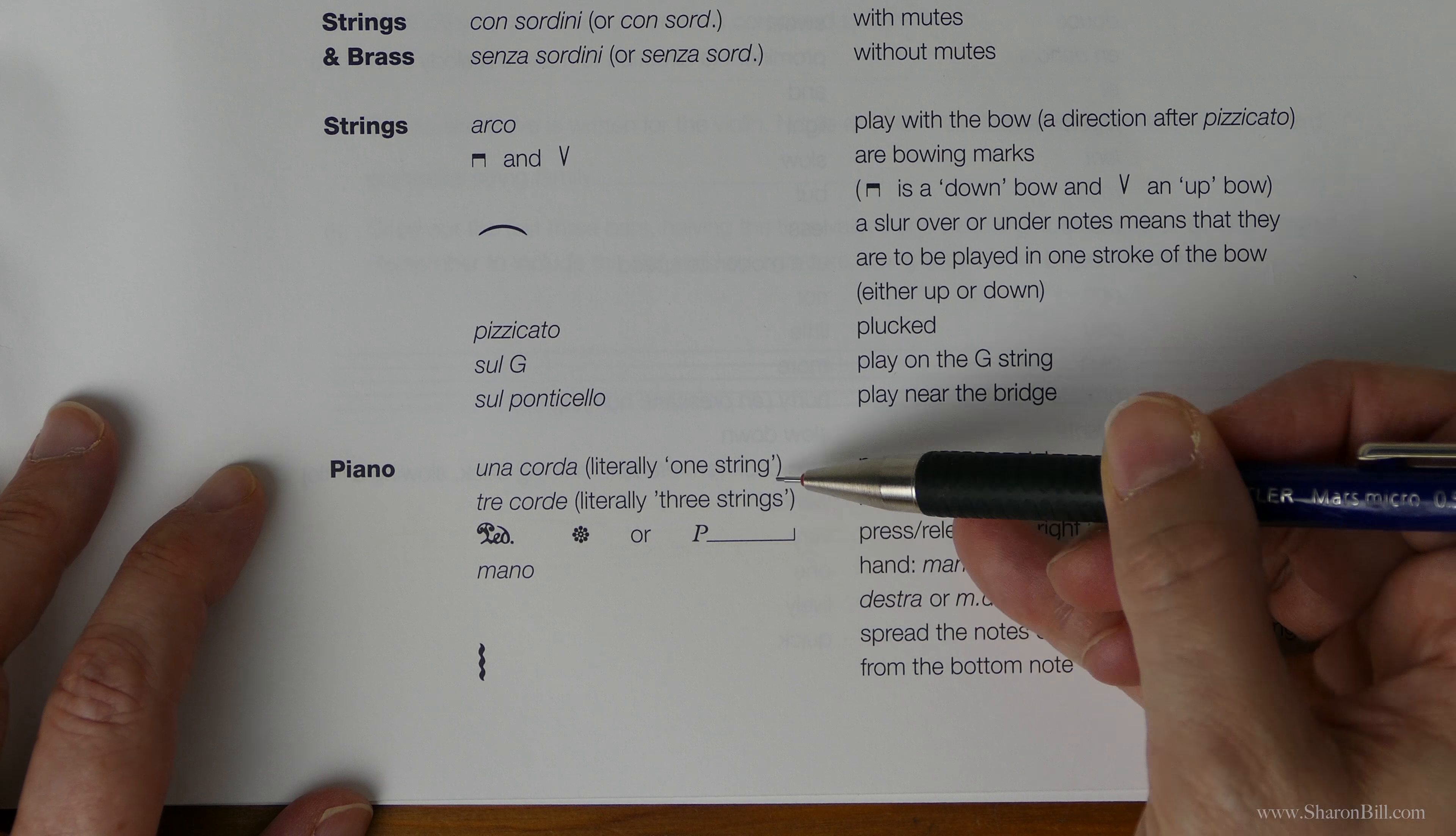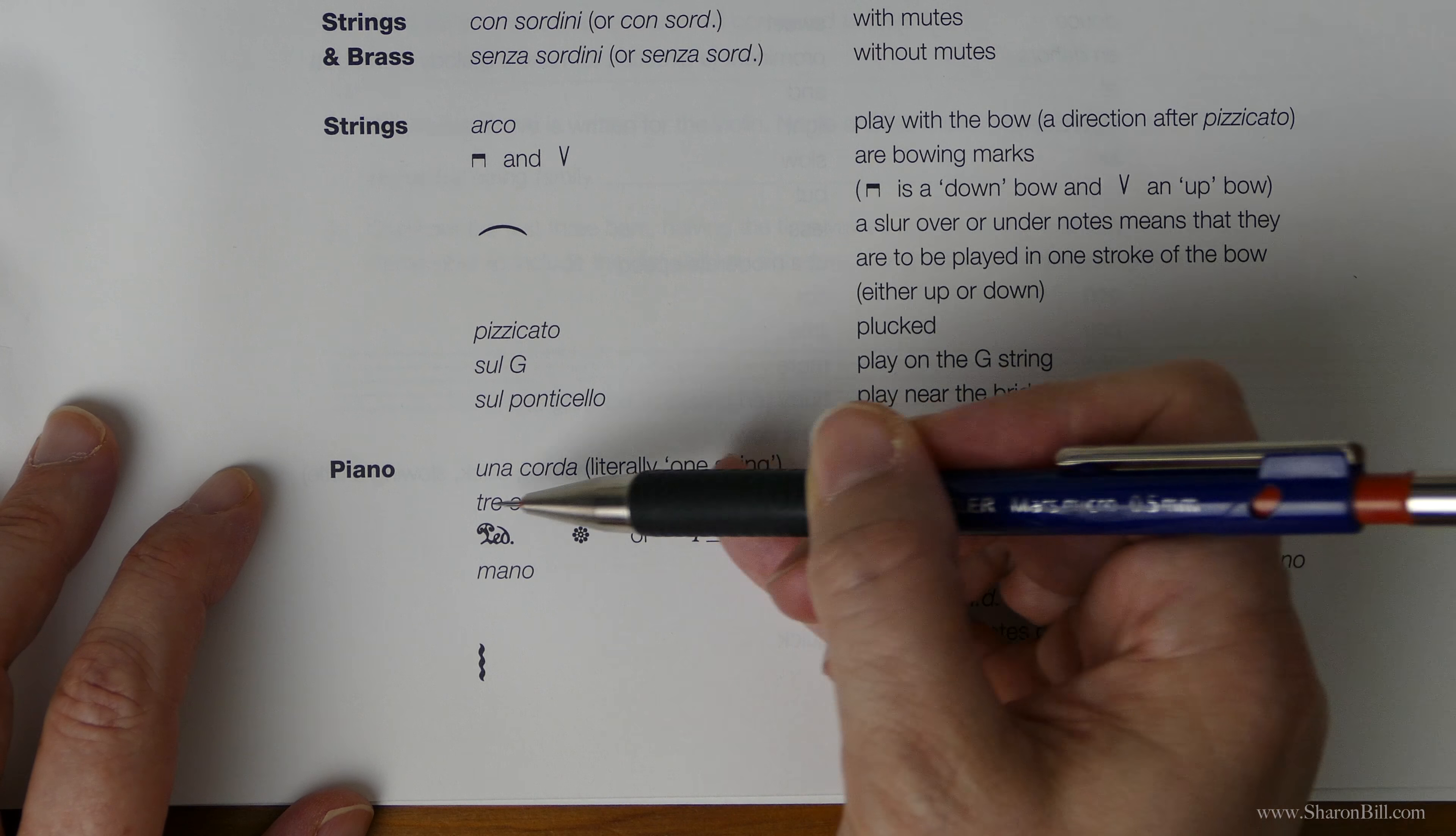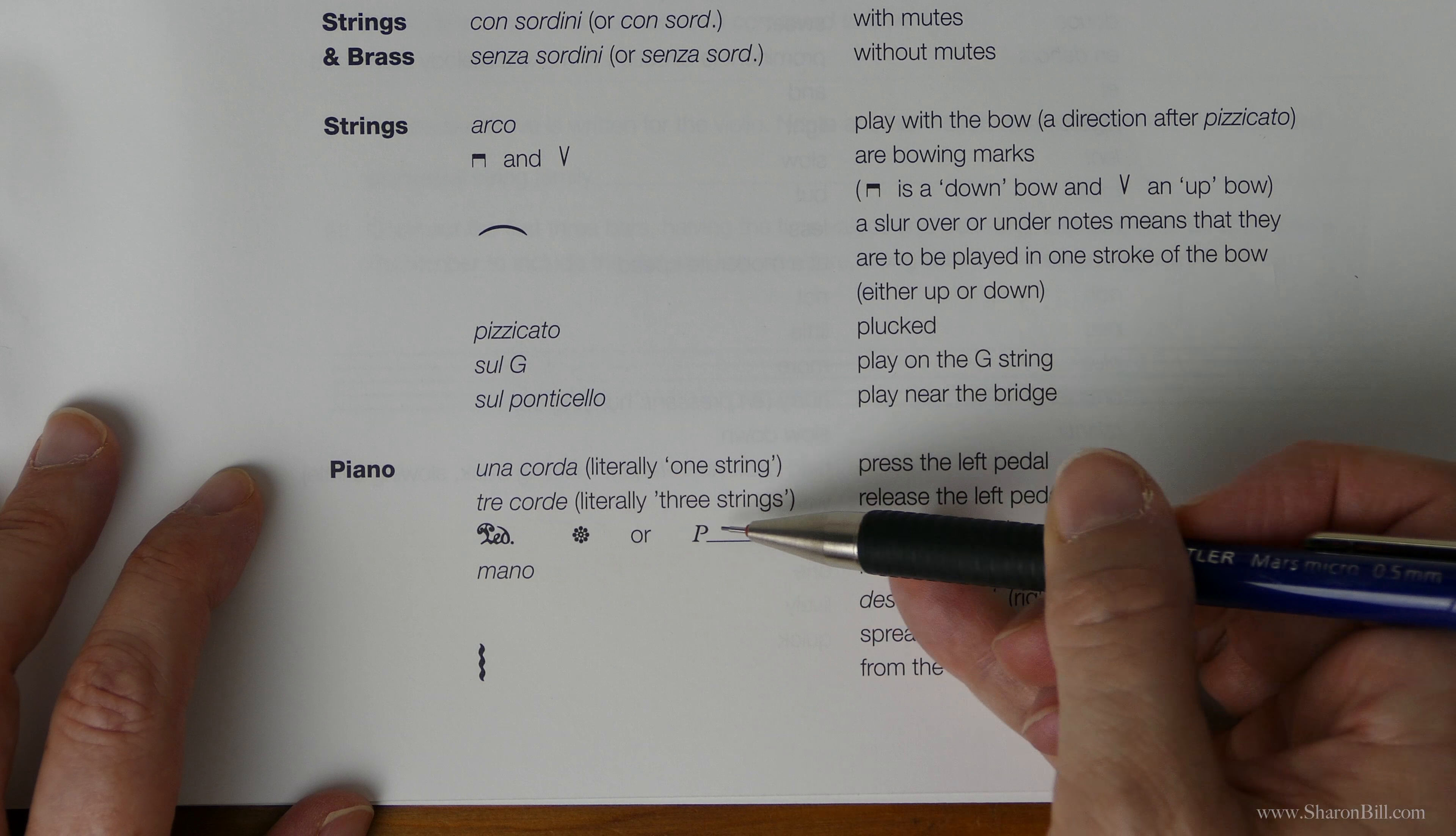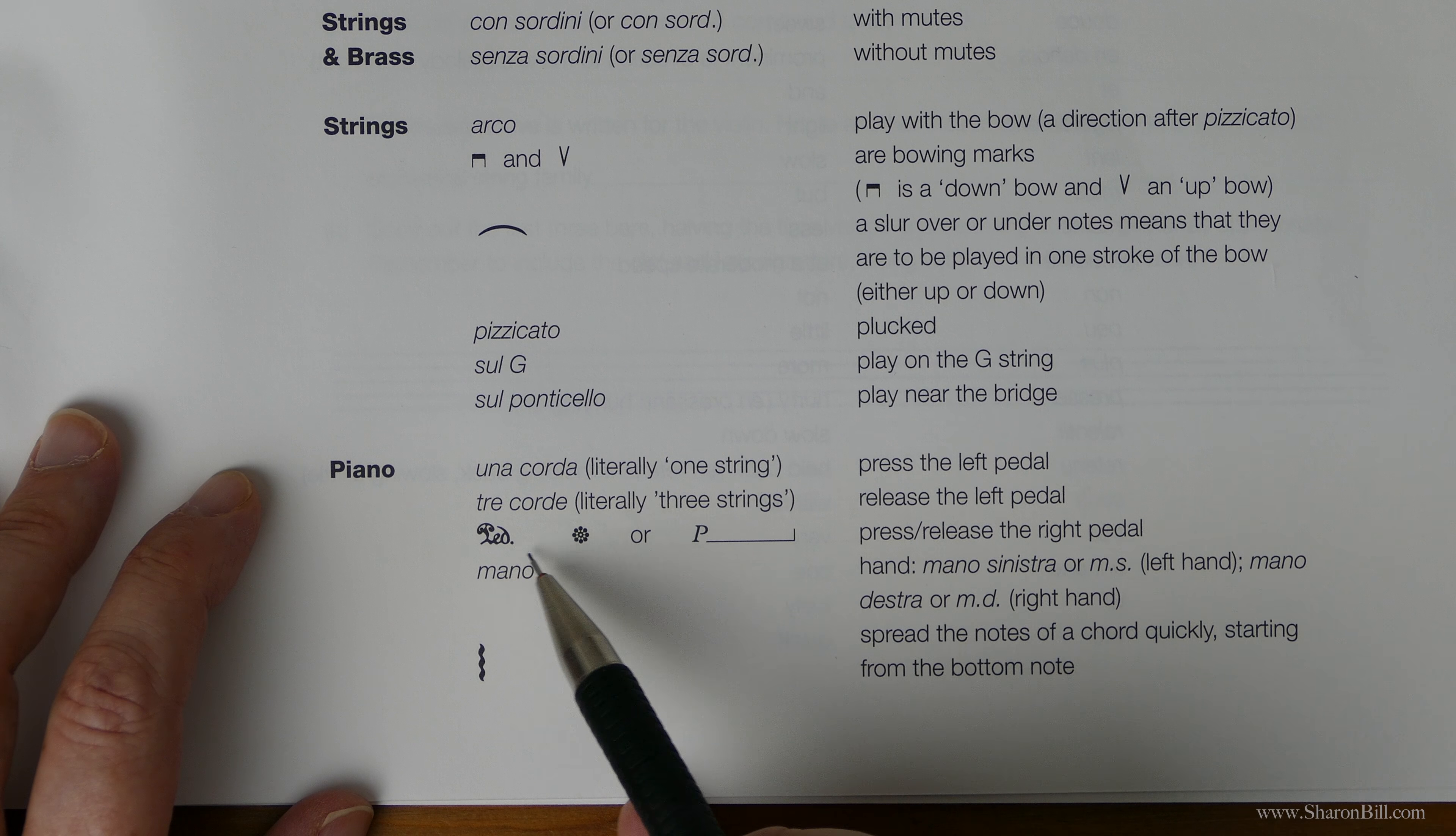And then we've got these pedaling directions where we have to press the left pedal, which causes just one string to sound—it dampens the other strings. If we need to release the left pedal, it puts us back on three strings, hence this symbol here.